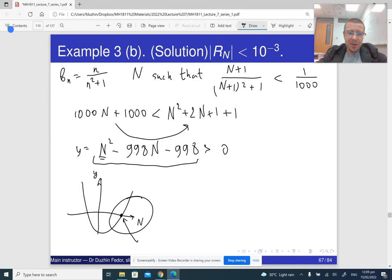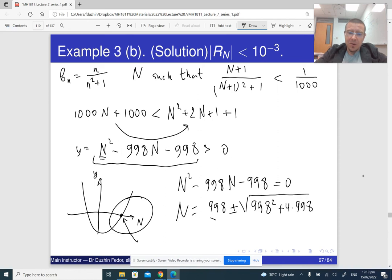So we need to find the intercepts. Basically, we need to equate it to 0 and solve the quadratic equation. So n squared minus 998n minus 998 should be equal to 0. So n is 998 plus or minus square root of, well, basically, 998 squared plus 4 times 998, over 2. We are looking for, so there are two zeros here. We are looking for the one that is bigger. So we are looking for the positive sign here. And my n is not really that number, but n should be bigger than that number. And n should be an integer. So what I can do, I can just take the next integer that is bigger than this number.